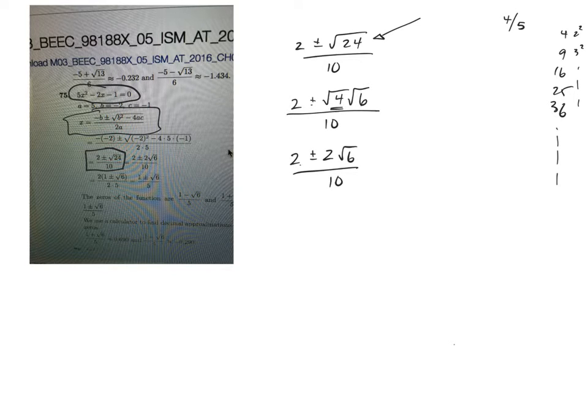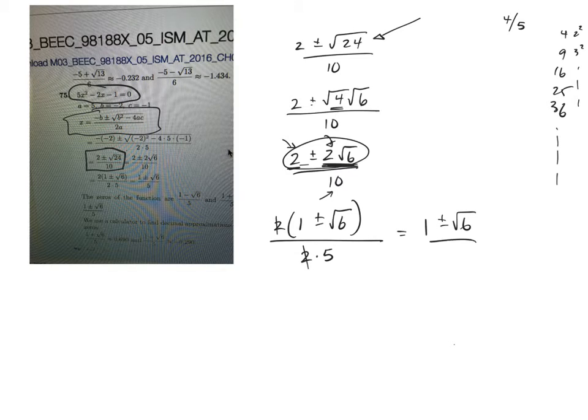And then at this point here you could divide 2 into all of the terms, or you could factor a 2 out of everything on the top there. So if I factor a 2 out, if I divide this by 2 I get a 1 plus or minus. If I divide this by 2, the 2's cancel, so it'll just be root 6. And then on the bottom, 10 is the same thing as 2 times 5, so the 2's both will cancel. So my answer is 1 plus or minus root 6 all over 5.